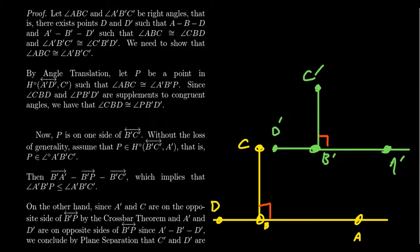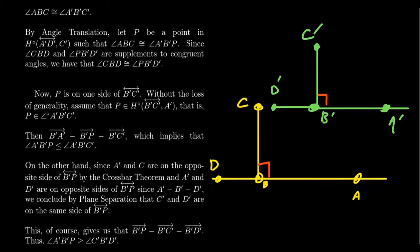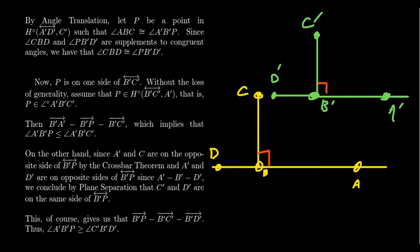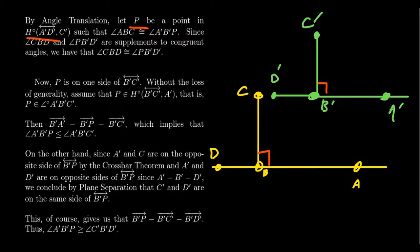What we are going to do is angle translation. We're going to translate one of these angles onto the other one. In particular, we're going to translate angle ABC onto this angle over here. That means there's some point P which lives in the open half-plane determined by the boundary line A'D', on the same side as point C. There's some point P such that when we construct the ray B'P, we get that angle ABC is congruent to angle A'B'P.